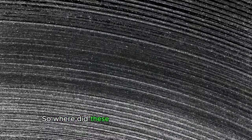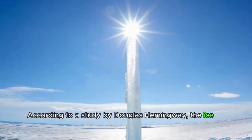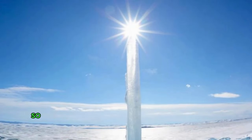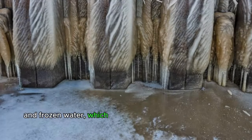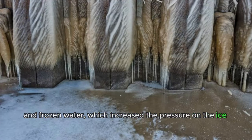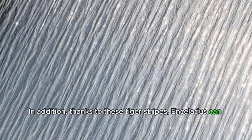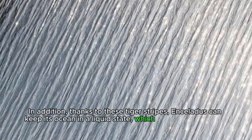So where did these amazing stripes come from? According to a study by Douglas Hemingway, the ice at the pole is thinner. So the cracks appeared there due to the gravitational interaction of Saturn and frozen water, which increased the pressure on the ice wall. In addition, thanks to these tiger stripes, Enceladus can keep its ocean in a liquid state, which is necessary for the origin of life.